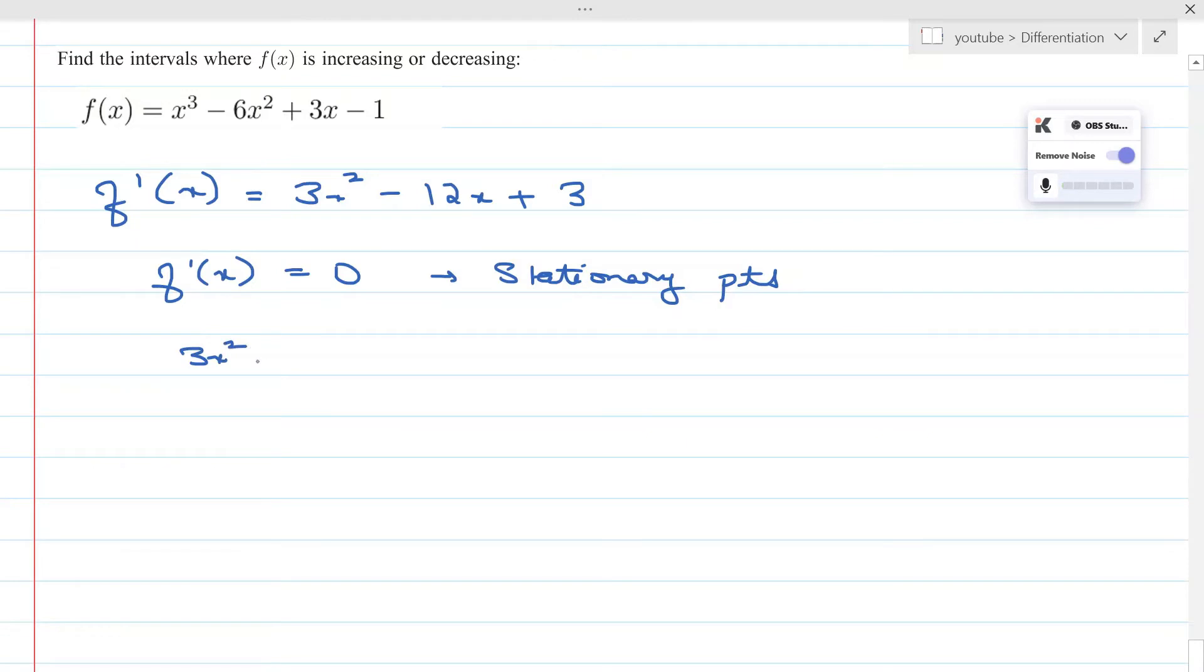So first we equate 3x² - 12x + 3 = 0. We get x² - 4x + 1 = 0.